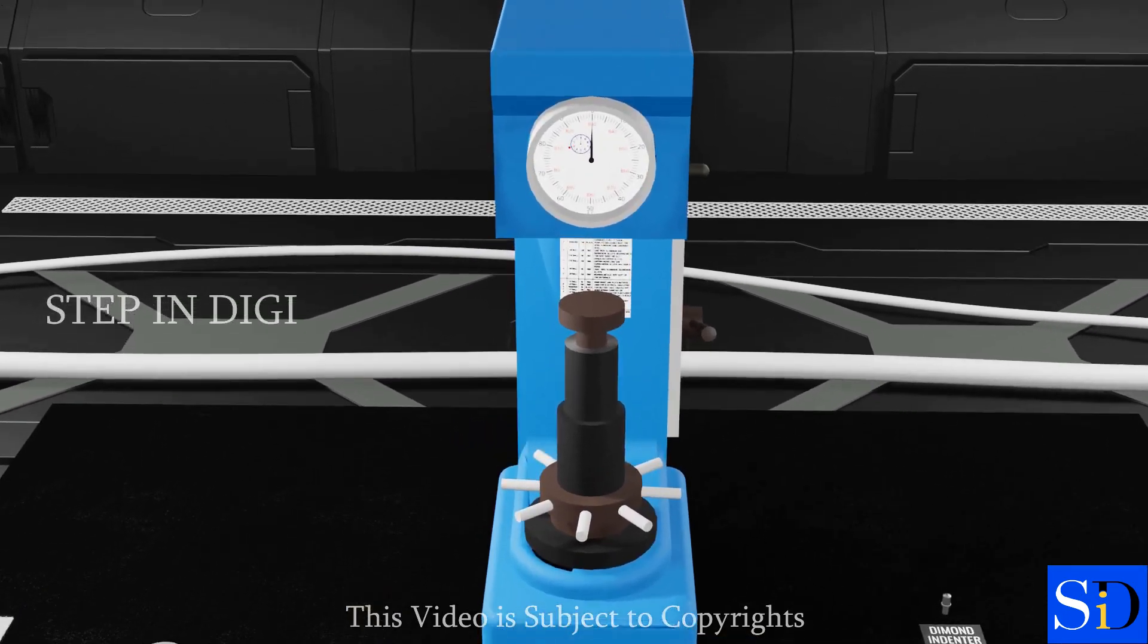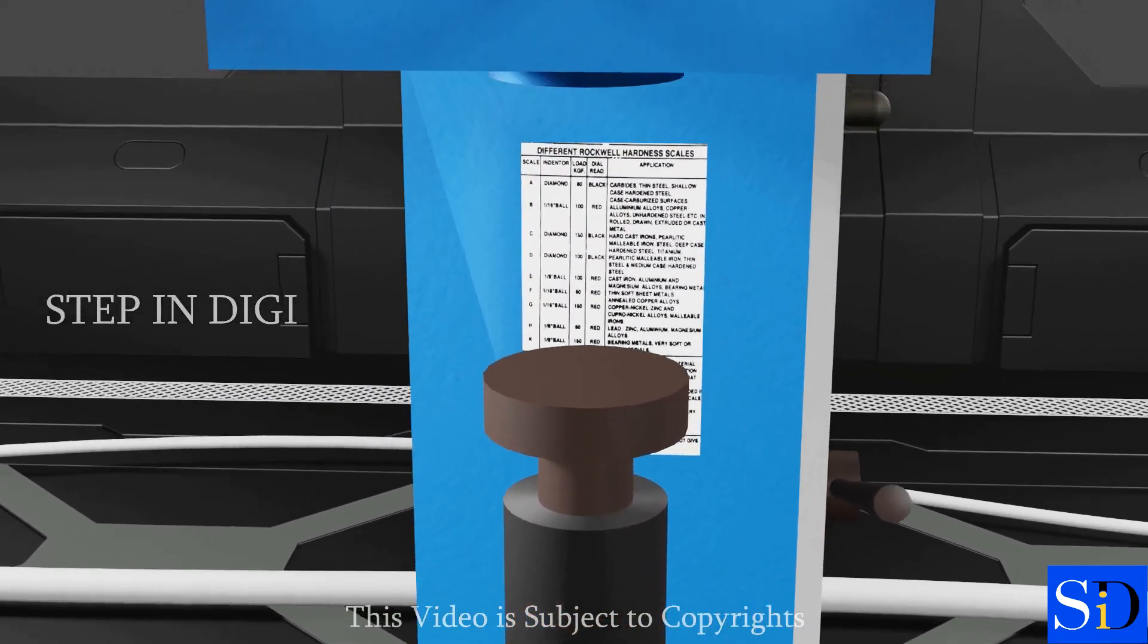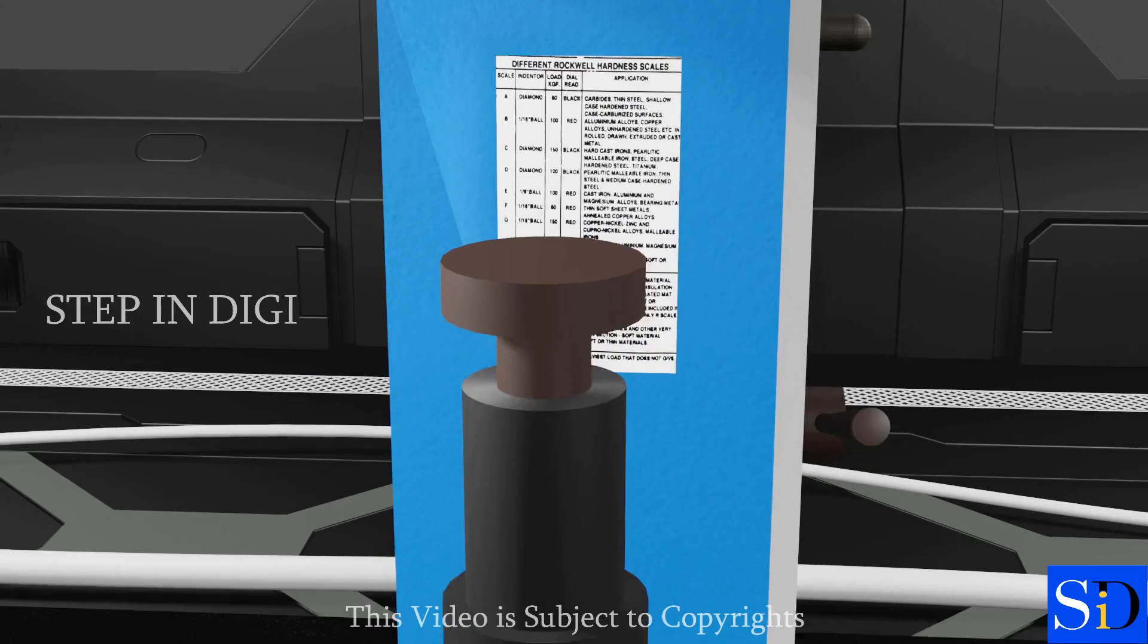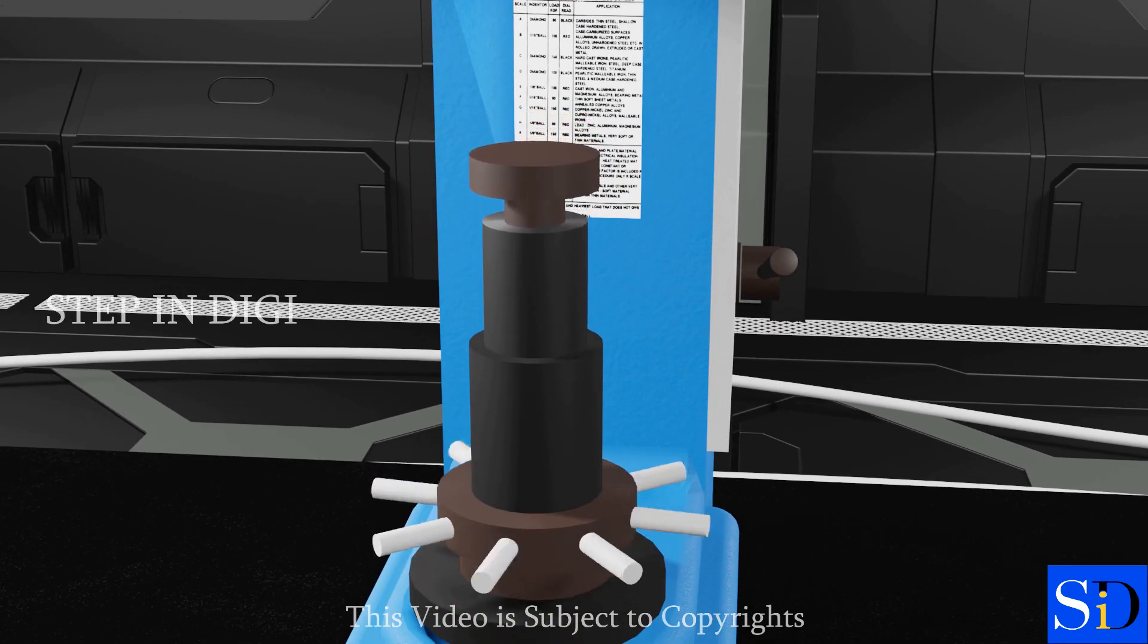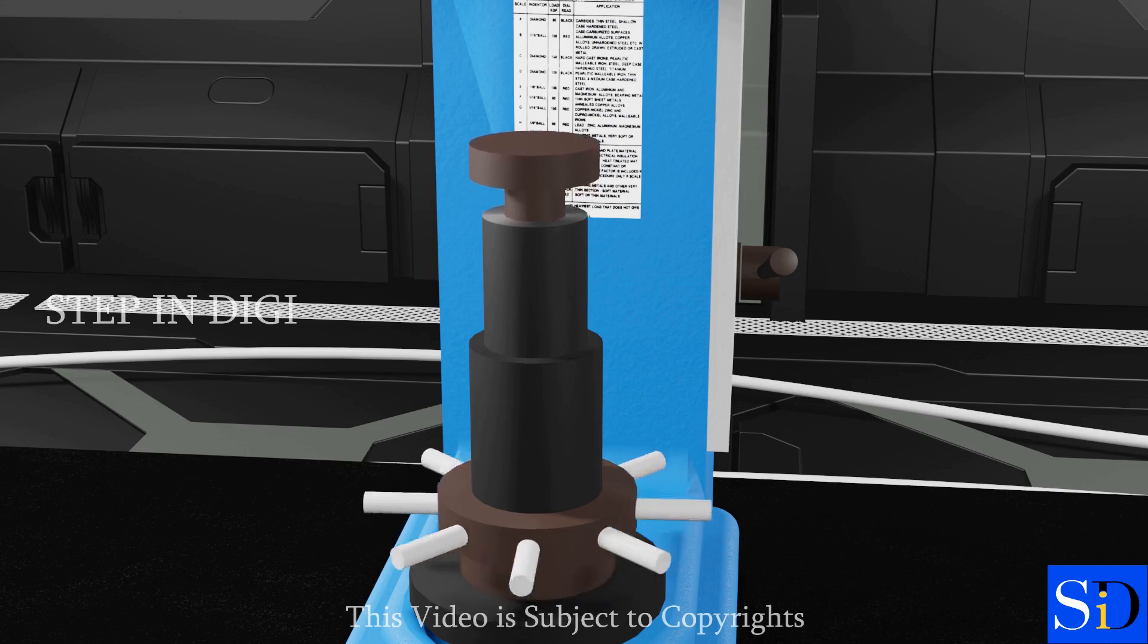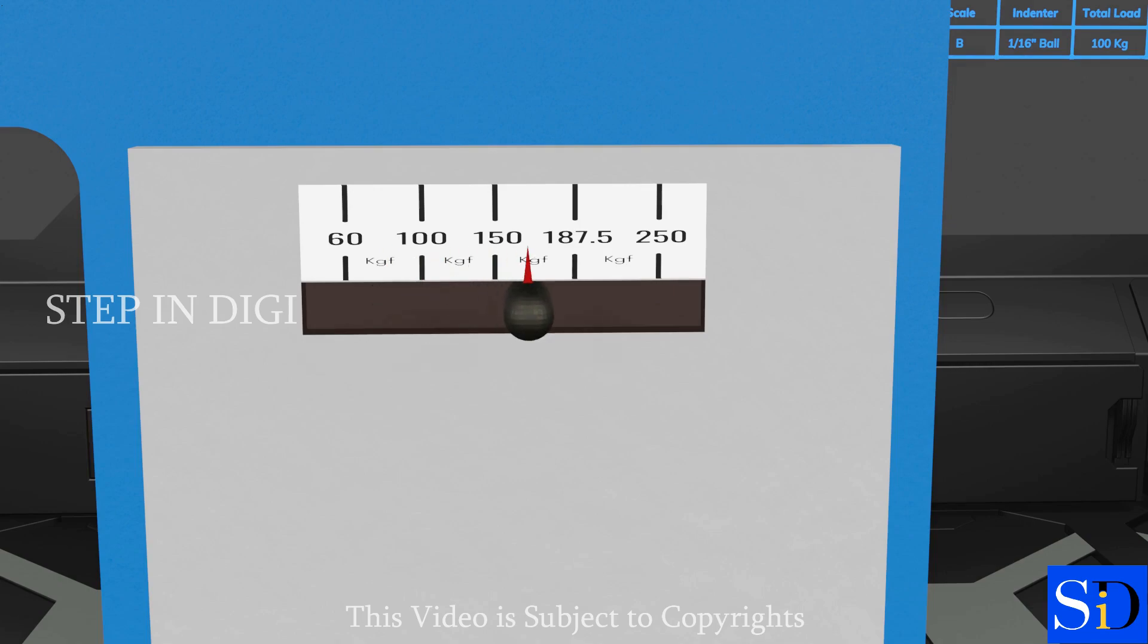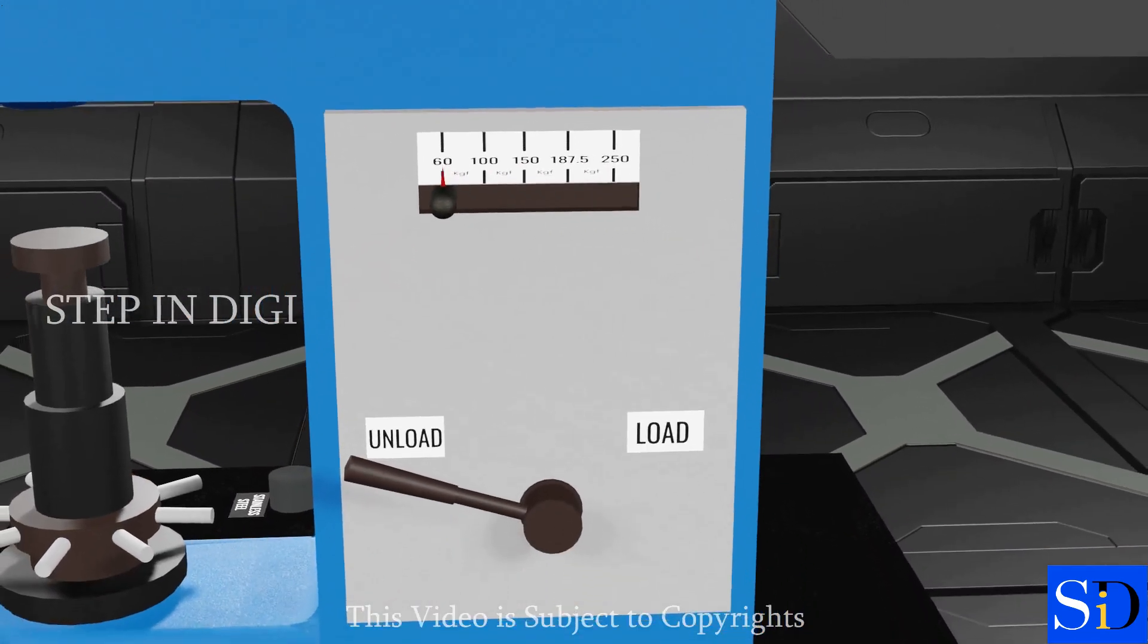Rockwell Hardness Testing Machine essentially consists of the following: 1. A supporting table for placing the specimen. 2. A hand wheel to raise or lower the supporting table. 3. A switch to change between loads. 4. A lever to load and unload the major loads.